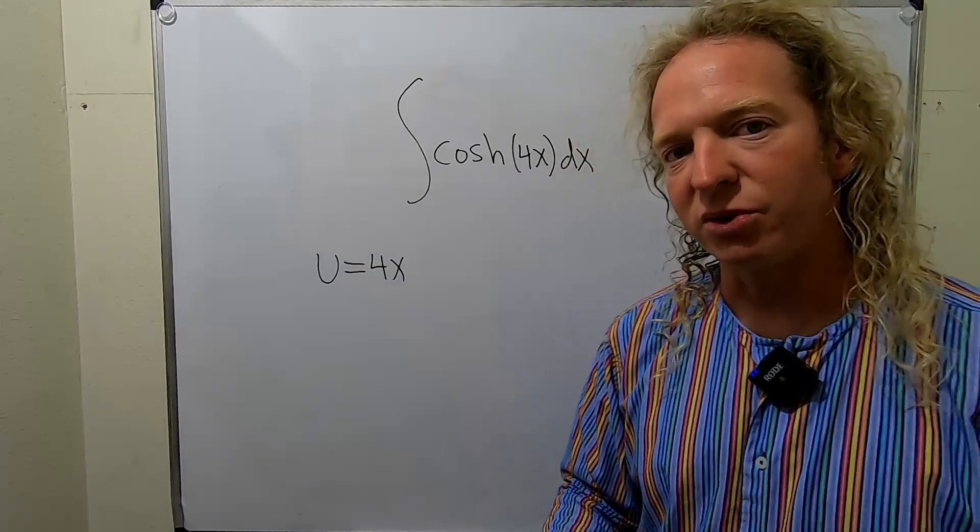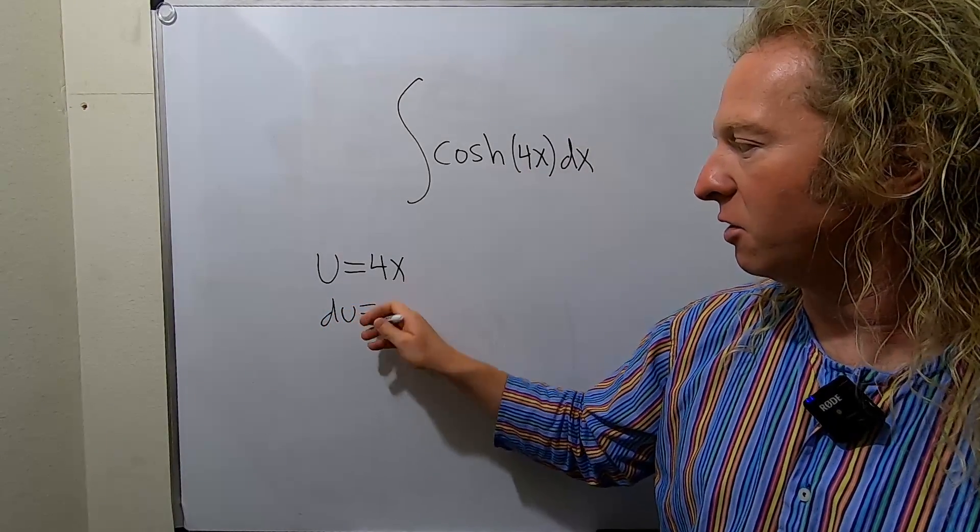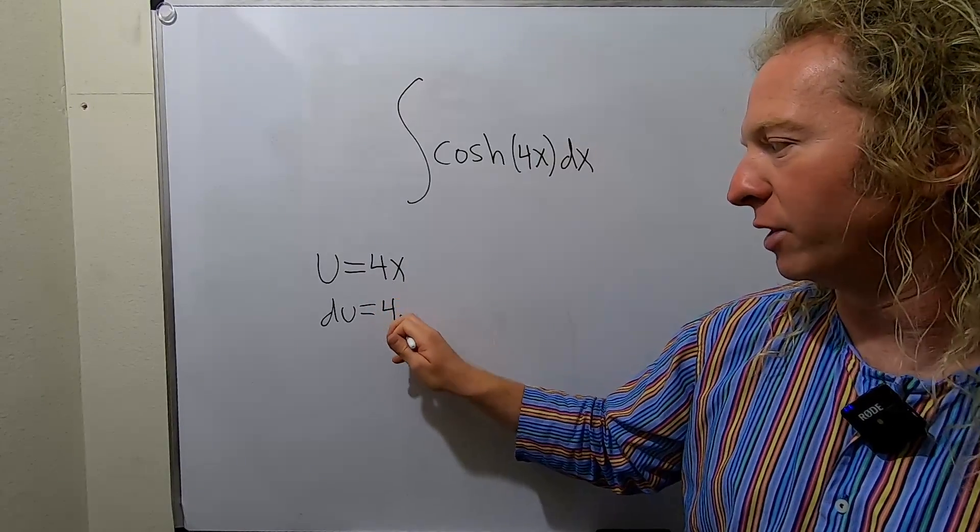And now we compute du. So du is the derivative of u, and the derivative of this is 4. So we get 4dx.